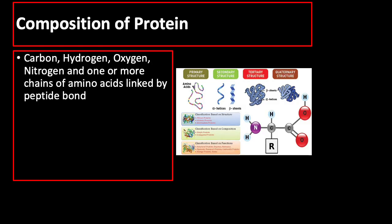Just a quick review about protein: protein is the basic component of living cells and is made up of carbon, hydrogen, oxygen, nitrogen, and one or more chains of amino acids linked by peptide bonds.